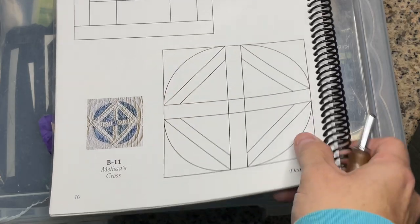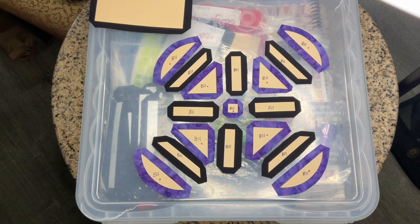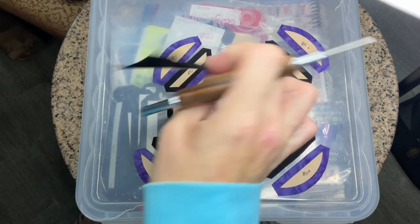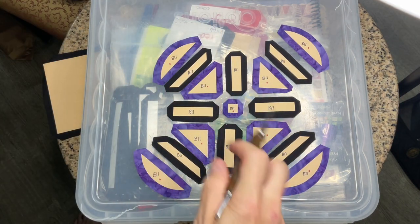So when we go to assemble it, we're going to start from here. This is my four and a half inch square that I'm going to set aside until the very end.